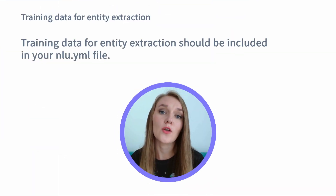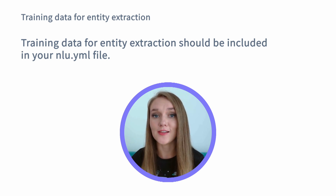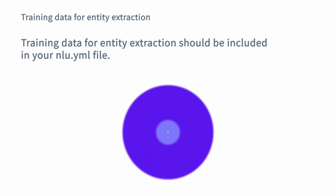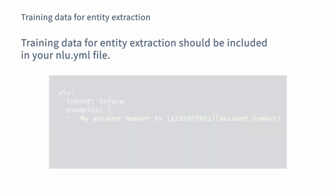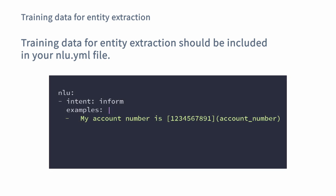Now a quick note on how the training data for entity extraction should look and where it should be stored. The training data for entity extraction should be stored inside of your nlu.yaml file. How should this data be labeled? It's a very simple convention: the word that should be extracted as an entity should be surrounded by square brackets, and then next to it you should include the label for this entity inside of parentheses.